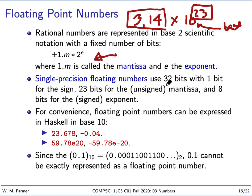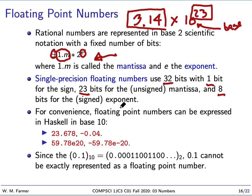For single precision floating point numbers, which are often just called floats, we have 32 bits: 1 bit for the sign, 23 bits for the unsigned mantissa — we don't need a bit for the leading 1 because we know the first digit is always 1 — and that leaves 8 bits for the exponent.